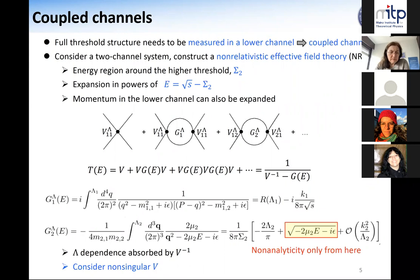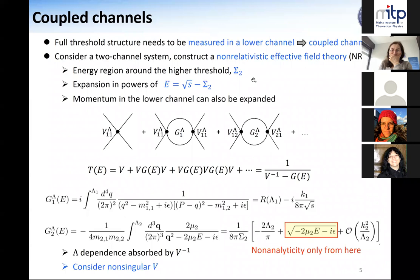To observe all threshold structures, we need coupled channels to observe the structure below the threshold. We consider the simplest coupled channel case — the two-channel case. The lower channel is channel one; the higher threshold channel is channel two. We restrict ourselves to the energy region around the threshold of channel two, which I call sigma_2, and define the energy E relative to the threshold of channel two.